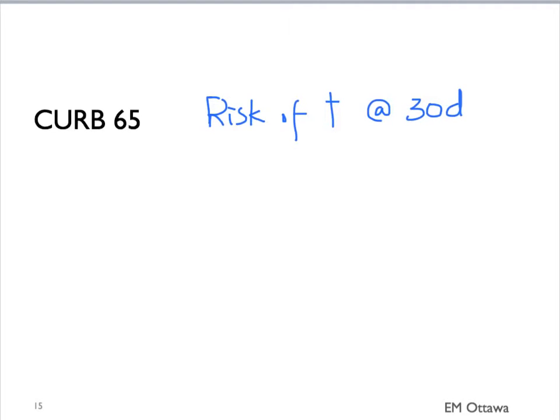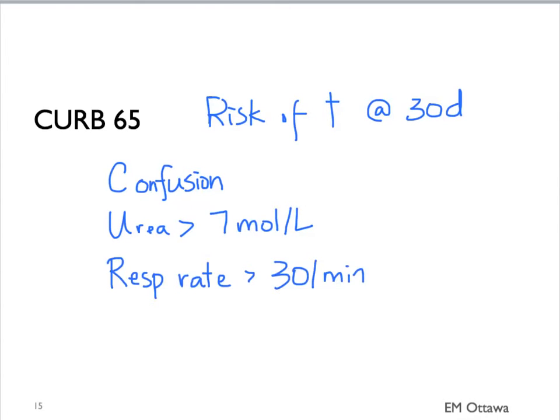This score uses five risk factors to assess the overall risk of death at 30 days. The more risk factors, the higher the risk. It stands for: C — confusion; U — urea more than 7 millimoles per litre; R — respiratory rate more than 30 per minute; B — blood pressure, either a systolic less than 90 or a diastolic less than 60; and 65 — age greater than or equal to 65 years old.